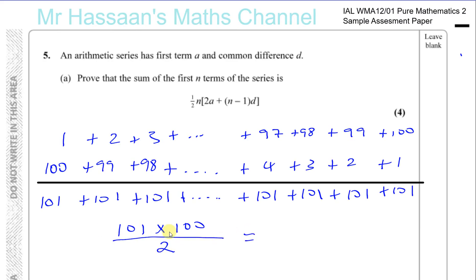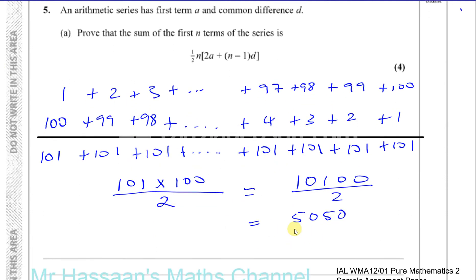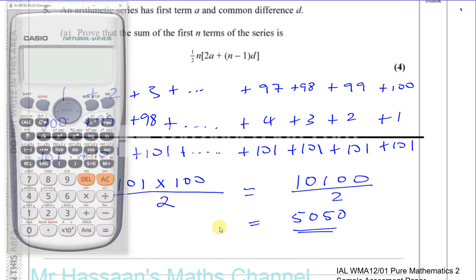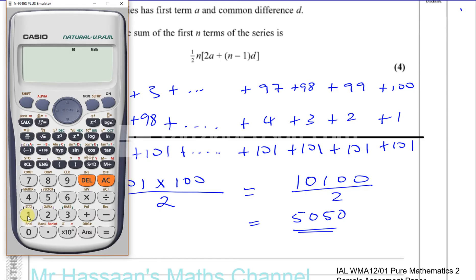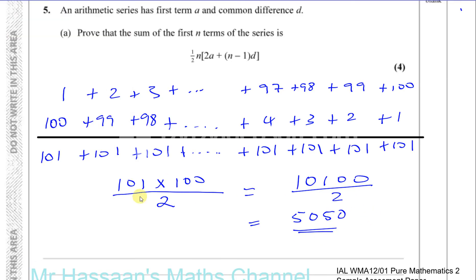101 times 100 divided by 2: 2 into 10100 gives 5050. So 5050 is the sum of the first 100 terms, and that's how quickly Gauss got the answer, surprising the teacher. Just confirming: 101 times 100 divided by 2 equals 5050. That's not the answer to this question, but it gives us the idea of how to proceed.